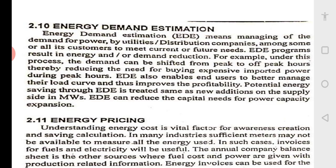Under this process, demand can be shifted from peak to off-peak hours, thereby reducing the need to buy expensive imported power during peak hours. There are two types of power plants: peak load power plants and base load power plants. Peak load power is always costly — for example, running a DG set is expensive — while hydel and nuclear power are cheaper. If additional power is needed, gas turbine plants are started, which are expensive and operate during peak hours. Energy demand estimation enables end users to better manage their load curve and improve profitability.